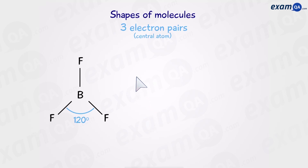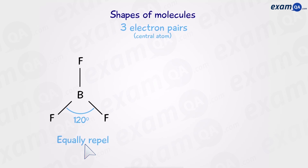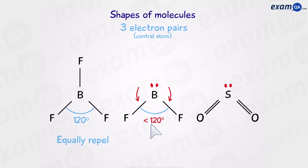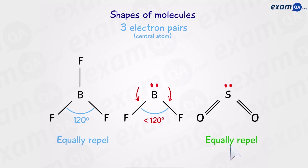If we have three bonded pairs — such as boron trifluoride — we get an angle of 120 degrees because all bonds equally repel each other. If we swap one bond for a lone pair, the stronger repulsion pushes the two fluorine atoms closer together, making the angle less than 120 degrees. What about one lone pair and two double bonds? Since a lone pair and a double bond have the same repulsion, they all repel equally, giving the same 120 degrees as the first example.